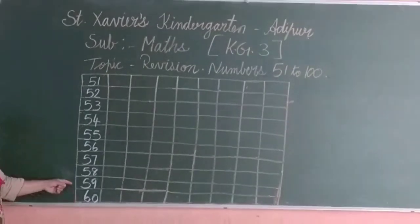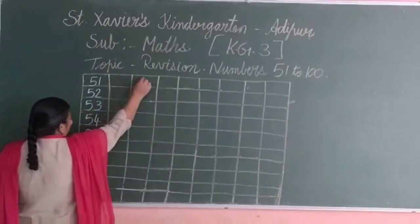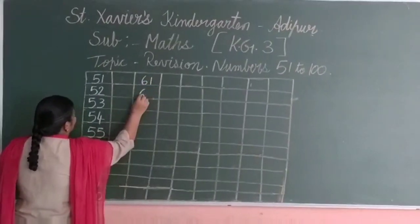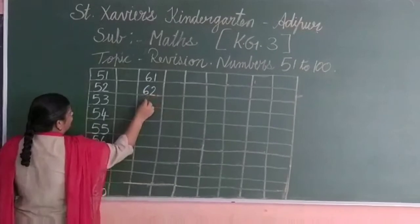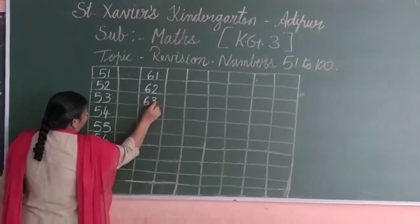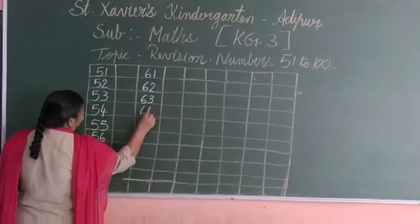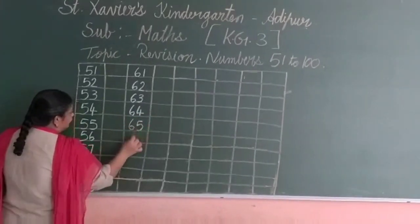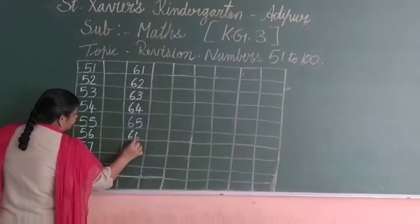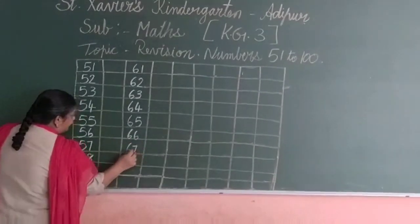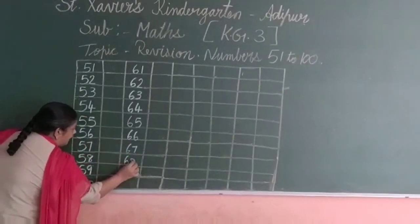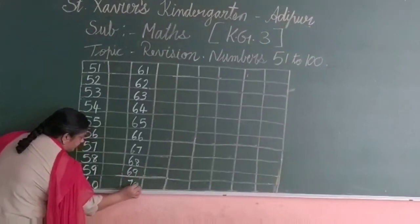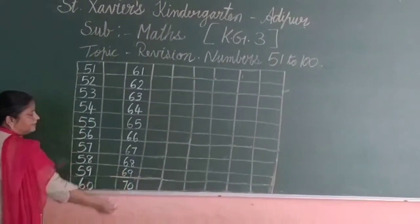After 60, 61. Leave one square and write 61, 62, 63, 64, 65, 66, 67, 68, 69, 70.